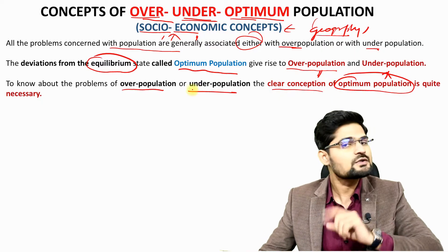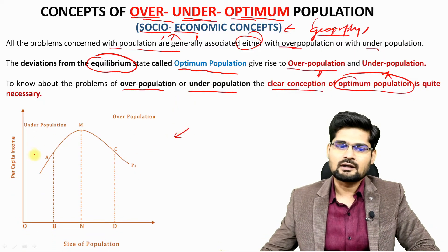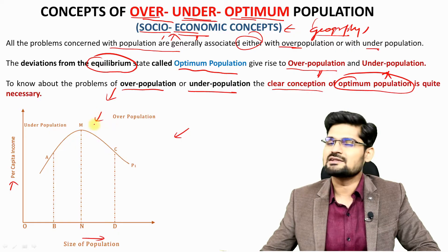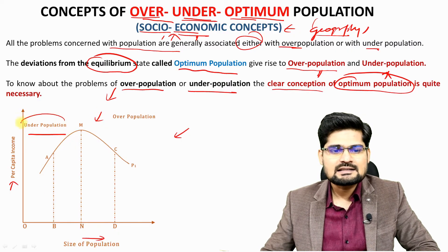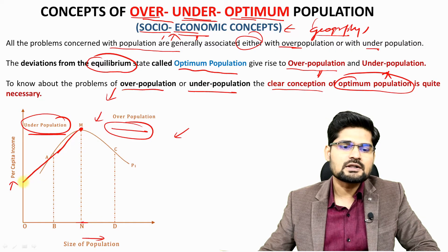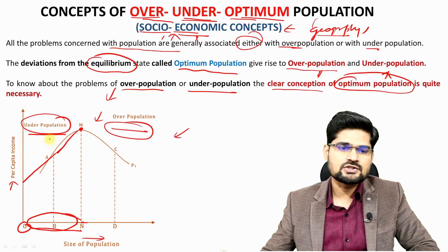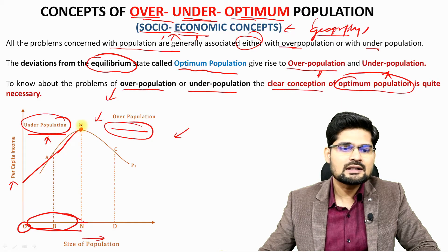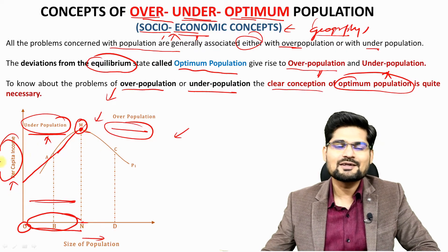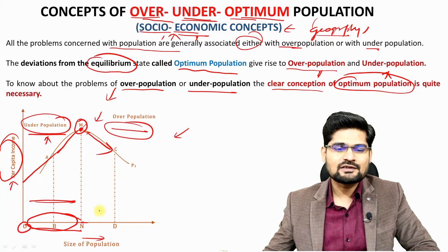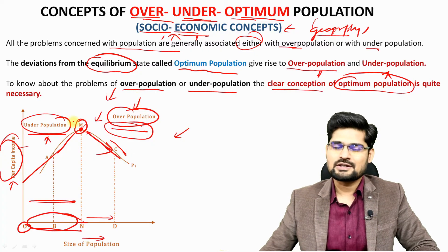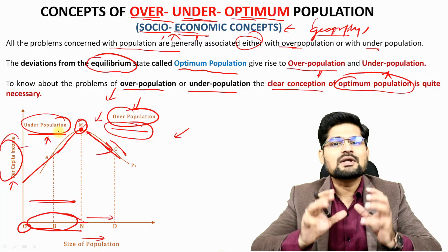Let's understand this from a graph showing per capita income and size of population — primarily an economics concept. On one side of the graph is underpopulation, and on the other side is overpopulation. The peak point — maximum per capita income — is the optimum point. Population below this point represents underpopulation. After this peak, as population grows further, per capita income declines, which represents overpopulation.